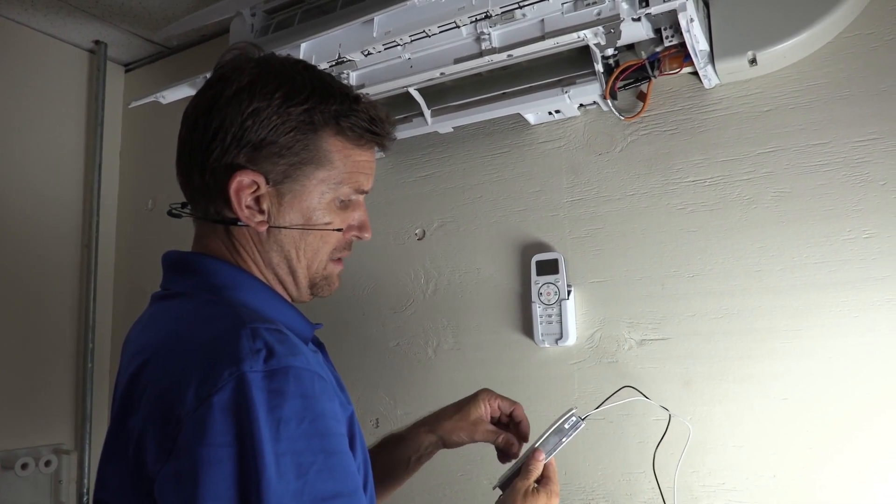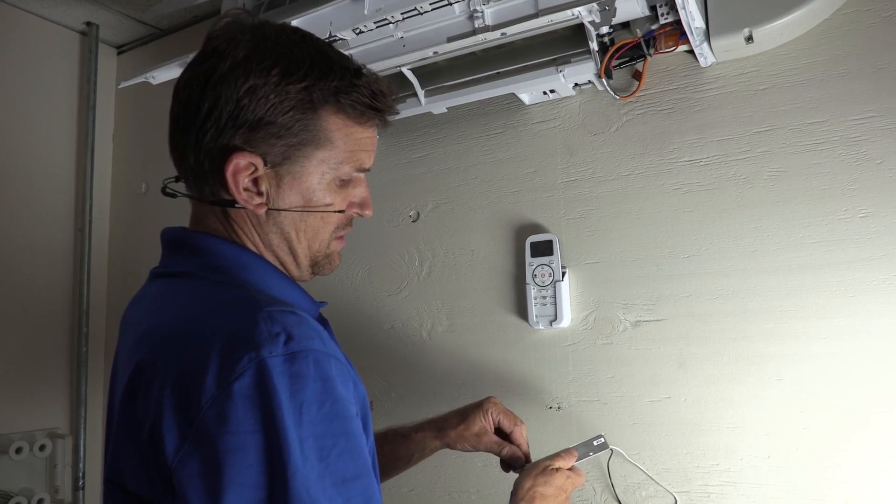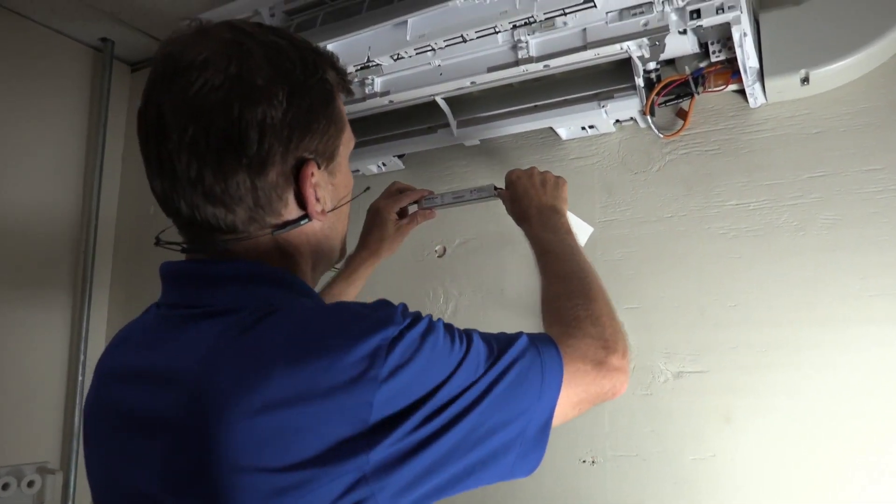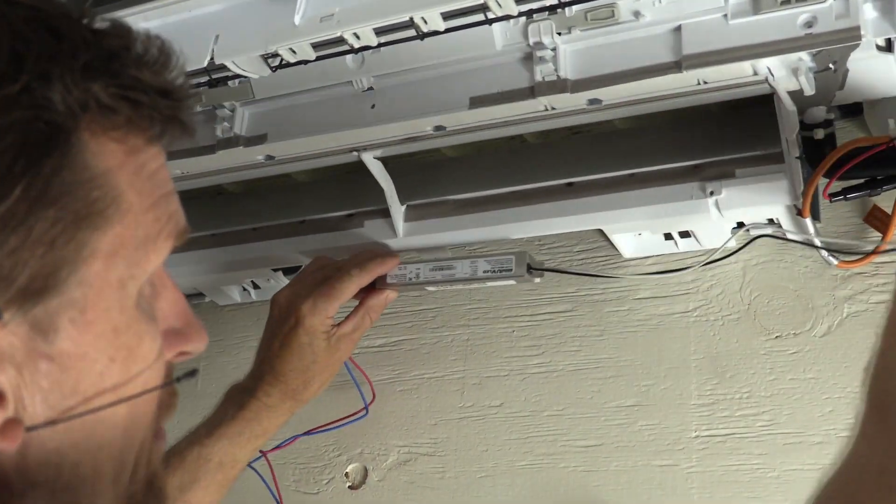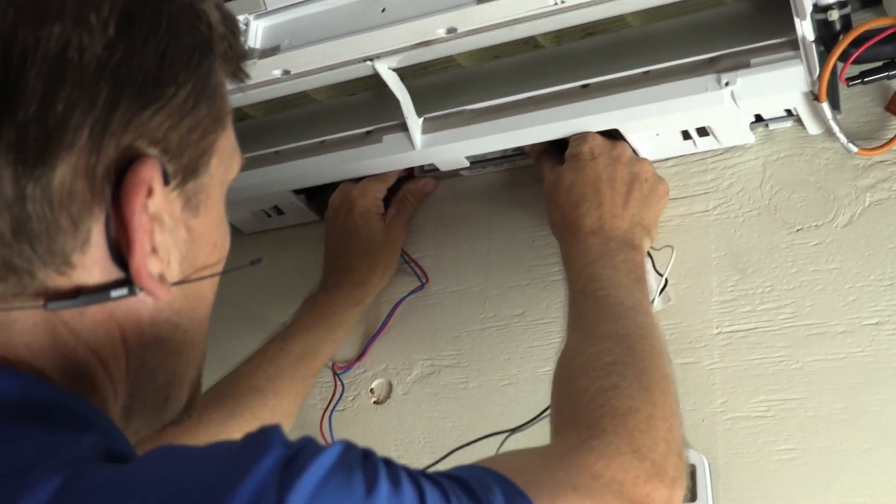This one actually has a bigger opening so what we're doing is we're just sticking the 3M double adhesive tape directly to the driver, pulling that off. Now, making sure that we have the line voltage on this side and on the left side that we have the lamp connector.